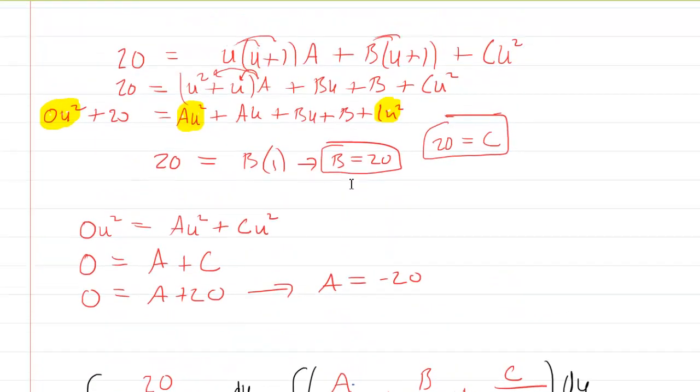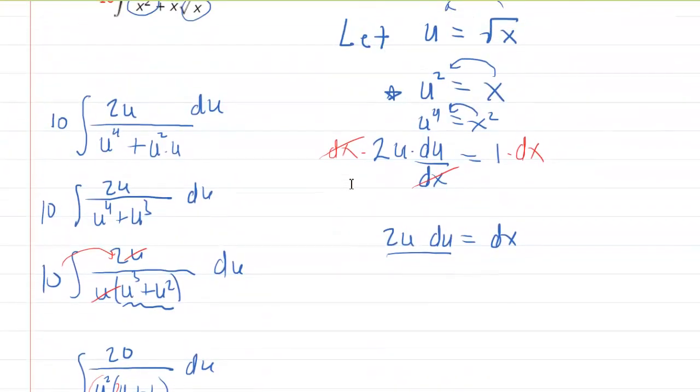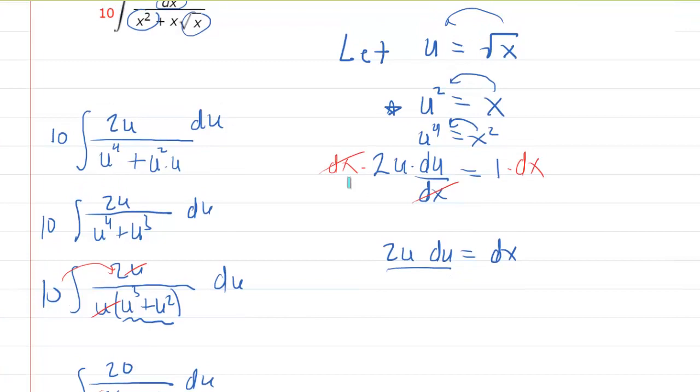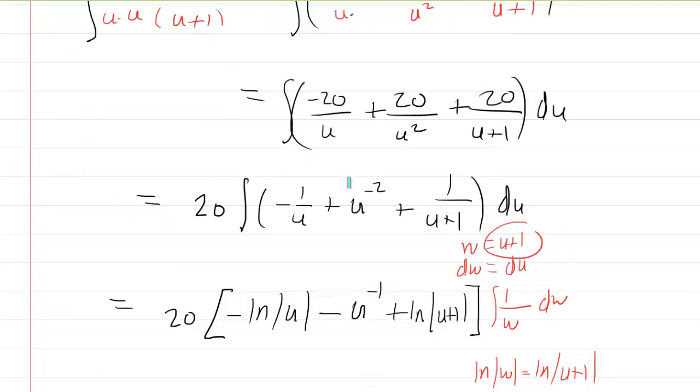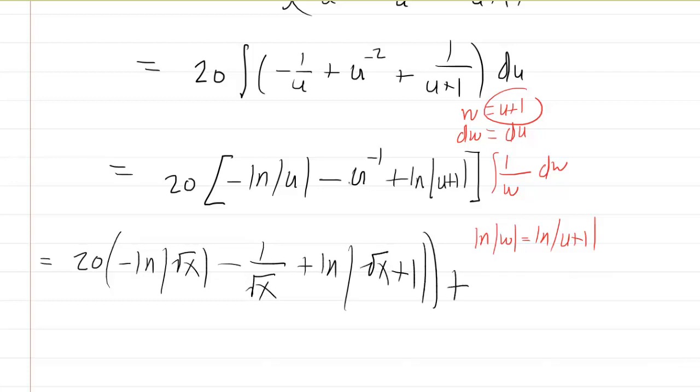But don't forget that u, going all the way back to the original substitution that we had made, u was the square root of x. So in fact, you've got to make sure you replace those u's with square root x. So you'll have 20 times negative ln absolute value of square root of x minus, we could rewrite this as 1 over our u, like that, and then plus the natural log of the absolute value of the square root of x plus 1. Close it off, include your constant of integration, and there is your answer. Amen.